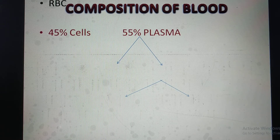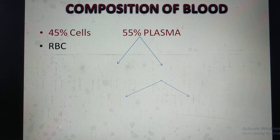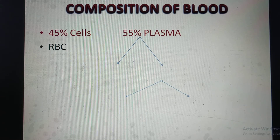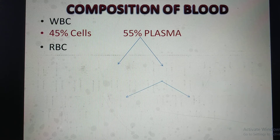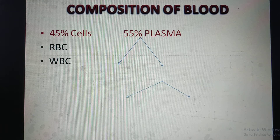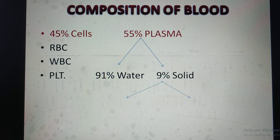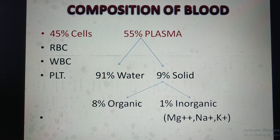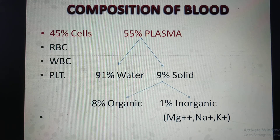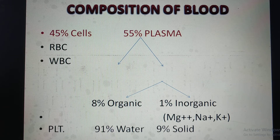Composition of blood: 45% cells, containing RBC (red blood cells, also called erythrocytes), WBC (white blood cells, leucocytes), and platelets. 55% plasma, which contains 91% water and 9% solid material. The 9% solid material contains 8% organic substances and 1% inorganic substances. The 1% inorganic substances include magnesium, potassium, sodium, and copper.